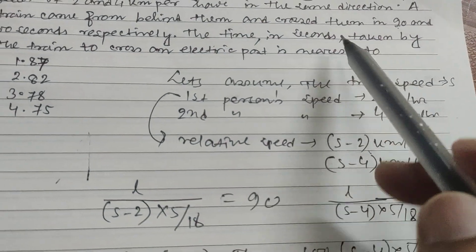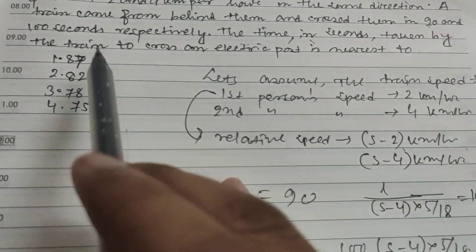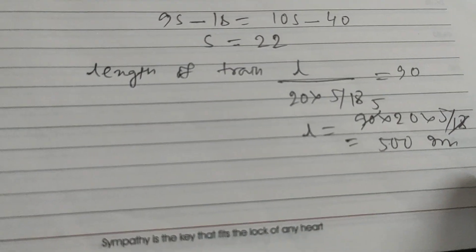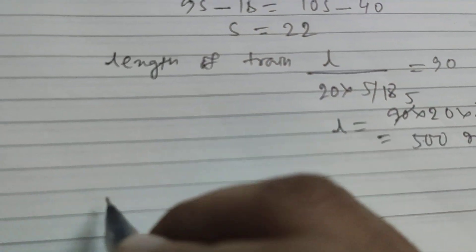The question asks for the time in seconds taken by the train to cross an electrical post. Required time equals...